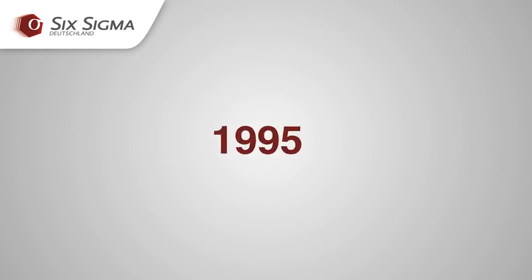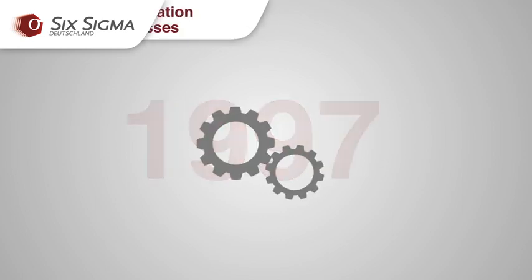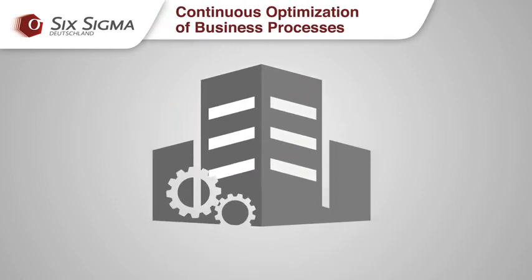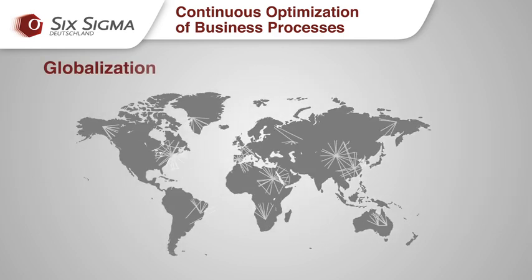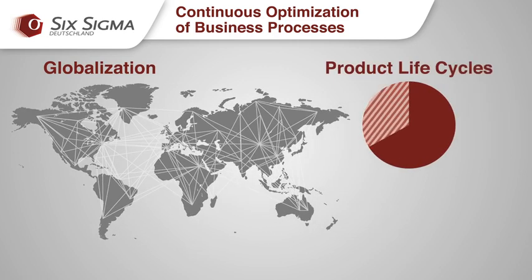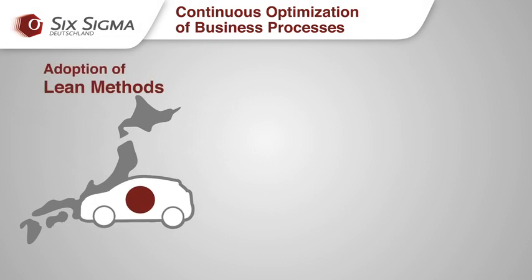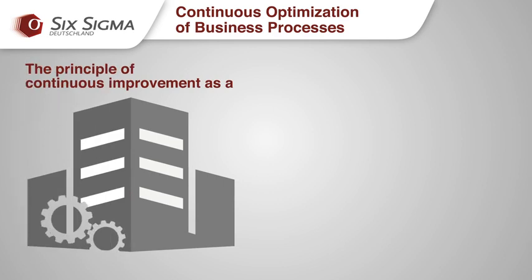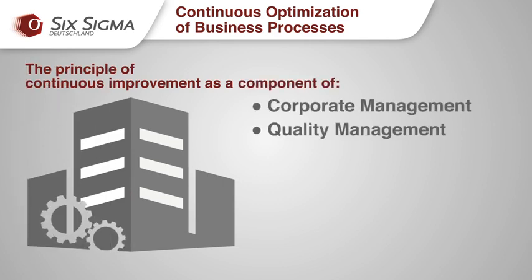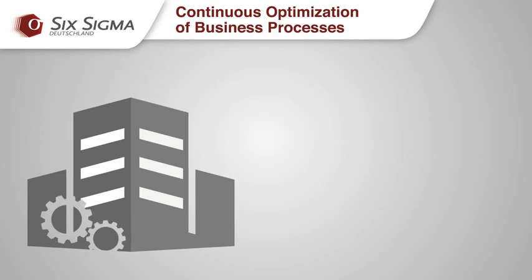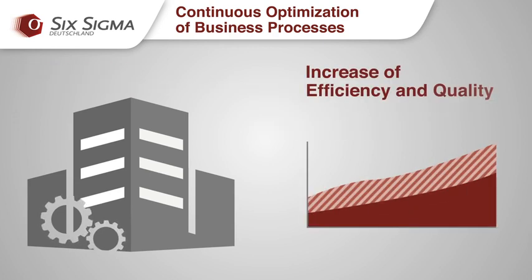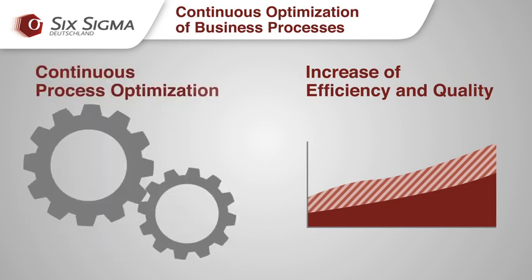Since the early 1990s, companies have been focused on the concept of continuous improvement. There are three reasons for this. One, competition has increased thanks to globalization and ever shorter product life cycles. Two, thanks to the broad adoption of lean methods from the Japanese automobile industry, the principles of continuous improvement have become a standard component of corporate management. Three, the ongoing optimization of processes is necessary in order to increase efficiency and quality and thereby stay competitive.